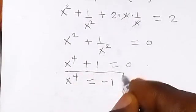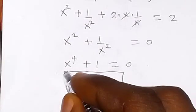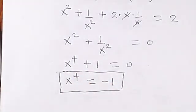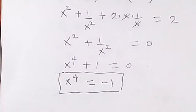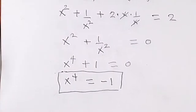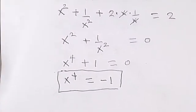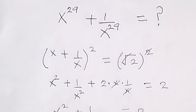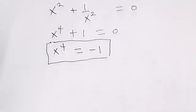Let's take note of this: x to the power 4 equals minus 1. Now from what we are finding, which is x to the power 29 plus 1 over x to the power 29.